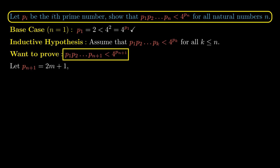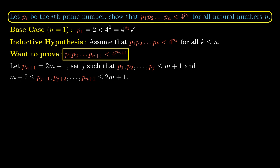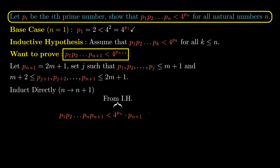I set j such that p_1, p_2, …, p_j are all less than or equal to m+1, and m+2 is less than or equal to p_{j+1}, p_{j+2}, …, p_{n+1}, which are all less than or equal to 2m+1. It may become clear later why we split the prime numbers into two sequences. Note that the attempt to induct directly from n to n+1 is entirely naive and not useful, as the inequality we end up trying to prove is not true in general.